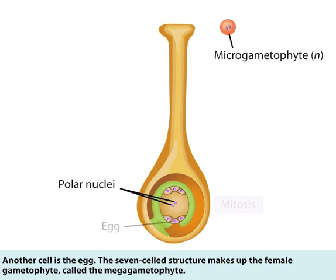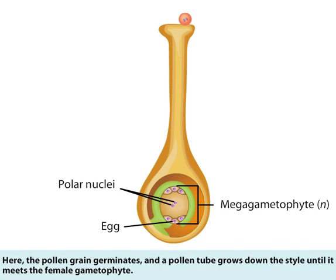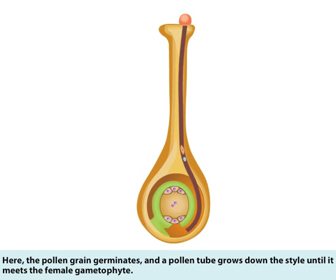Another cell is the egg. The seven-celled structure makes up the female gametophyte called the megagametophyte. The pollen grain pollinates the female parts of the flower by landing on the stigma. Here, the pollen grain germinates and a pollen tube grows down the style until it meets the female gametophyte.